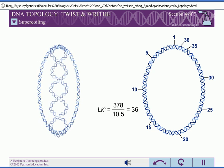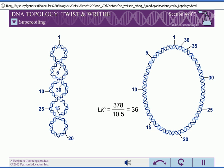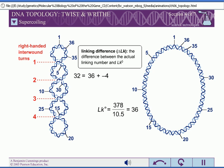If writhes are introduced to the DNA without changing the number of twists, the linking number changes. The difference between the actual linking number and LK0 is the linking difference. If the linking difference is significantly less than zero, the DNA is negatively supercoiled.